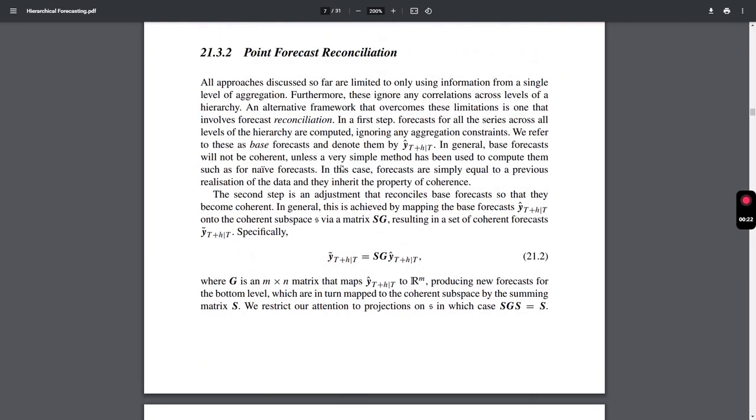Instead of using top-down, bottom-up, or middle-out approaches, which don't take into consideration the correlations between the time series, we can instead use reconciliation. Reconciliation works by first forecasting each time series of all levels individually, and then aggregating them using a linear model for each time series. Each time series gets a say in predicting the other time series, which is weighted.